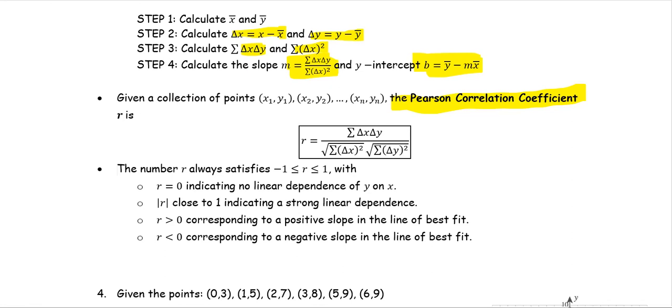With the linear regression notation just introduced, the formula for the Pearson correlation coefficient is r equals summation of delta x times delta y divided by the square root of summation of delta x squared times the square root of summation of delta y squared.